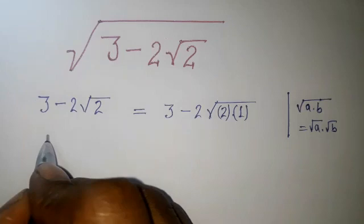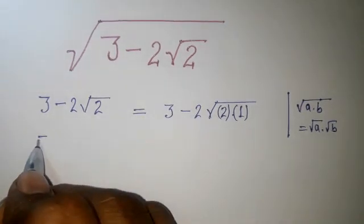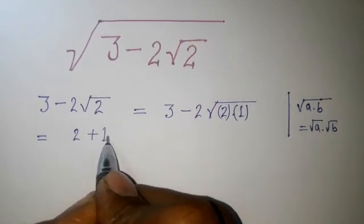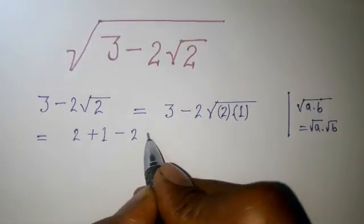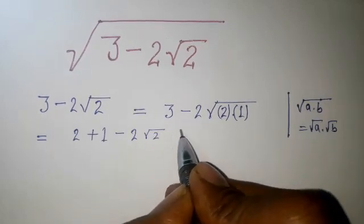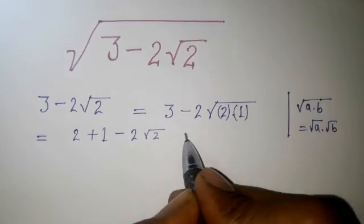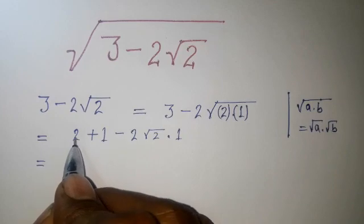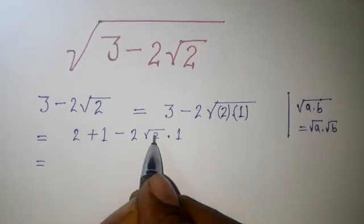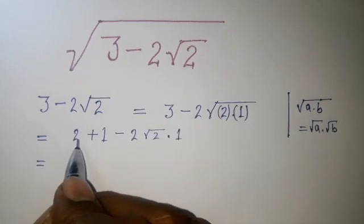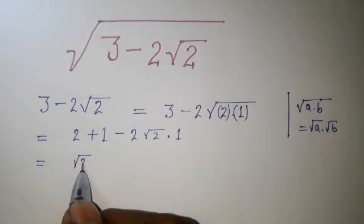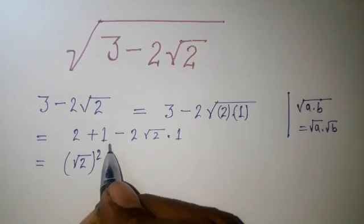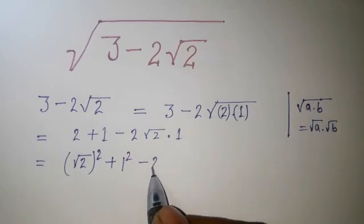3 can be written as sum of 2 and 1, so 2 plus 1, minus 2 root 2 and root 1, which is 1. And this root 2 will give us 2 by squaring. So we can write 2 as square root of 2 squared, 1 can be written as 1 squared, minus 2 root 2 and 1.